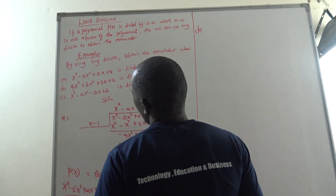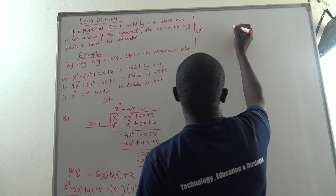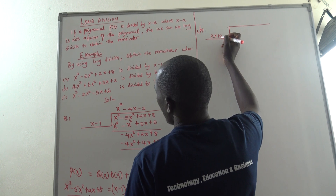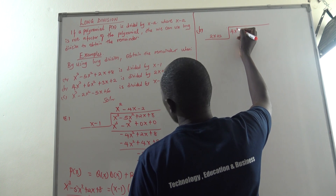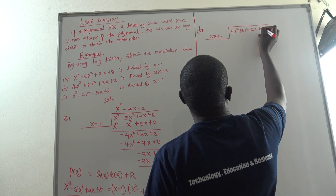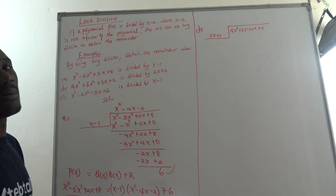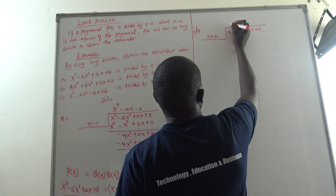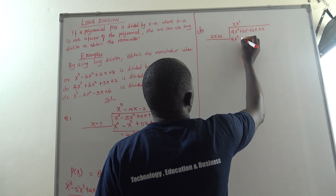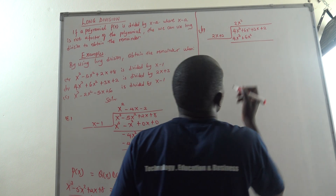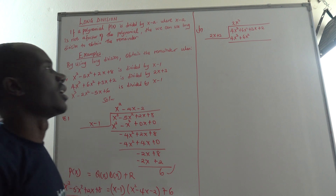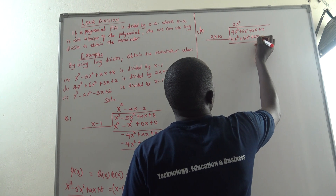Now we go to part B, where 4x cubed plus 6x squared plus 3x plus 2 is divided by 2x plus 3. We still use long division. The divisor is 2x plus 3, and the polynomial is 4x cubed plus 6x squared plus 3x plus 2. Which number can I put at the top when I multiply with 2x and get 4x cubed? Automatically, it is 2x squared. 2x squared times 2x gives 4x cubed. 2x squared times 3 gives 6x squared. We subtract: 4x cubed minus 4x cubed is 0, and 6x squared minus 6x squared is 0.